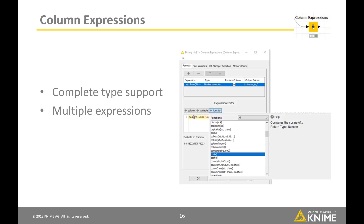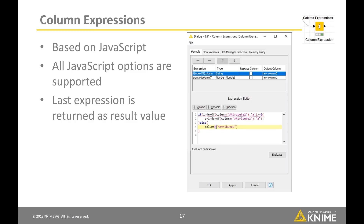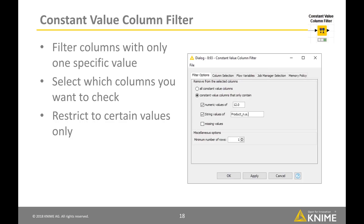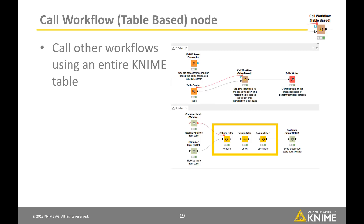The New Column Expressions node allows you to add new columns to a table or replace existing columns using expressions that are executed row-wise on the input table. A library of predefined functions for things like string manipulation and mathematical formulas makes it easy to construct expressions, which can be as simple as a single function call or as complex as you like. You can also implement expressions based on JavaScript syntax. The Constant Column Filter node removes columns from the input table if they have only one constant value, only missing values, or fewer rows than a specified minimum. The New Column Workflow Table Base node makes it easier to call other workflows using an entire KNIME table.